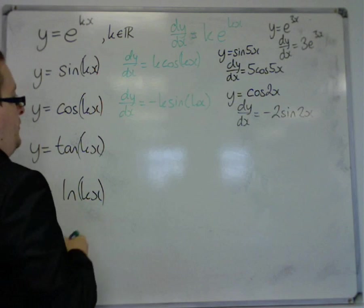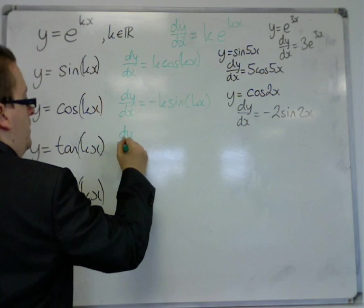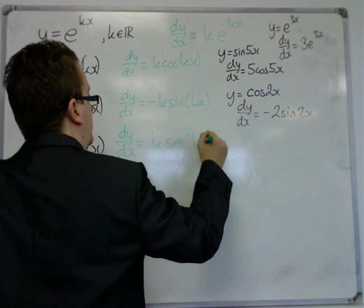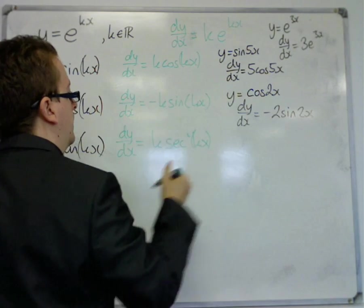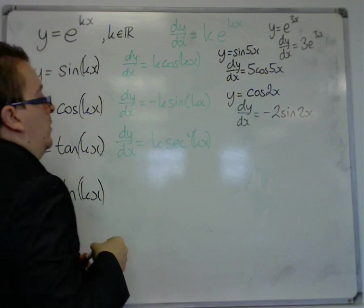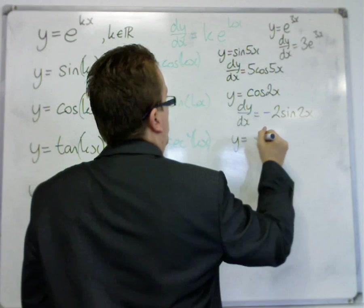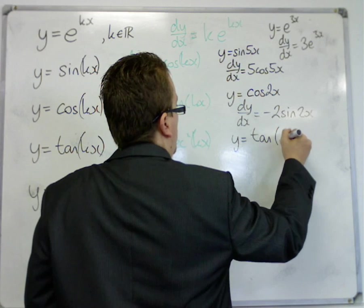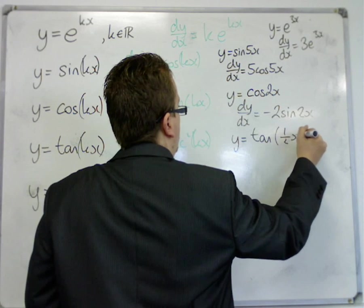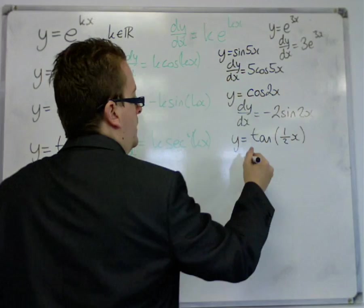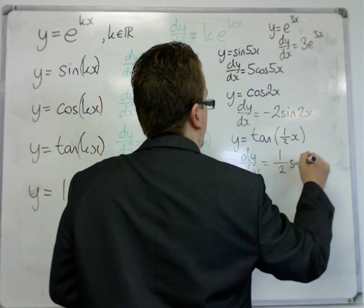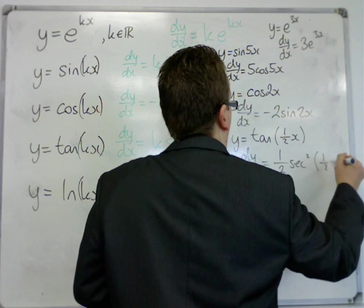y equals tan of kx, dy by dx is k sec squared kx. So, if we had y equals tan of 1 half x, then dy by dx is 1 half sec squared half x.